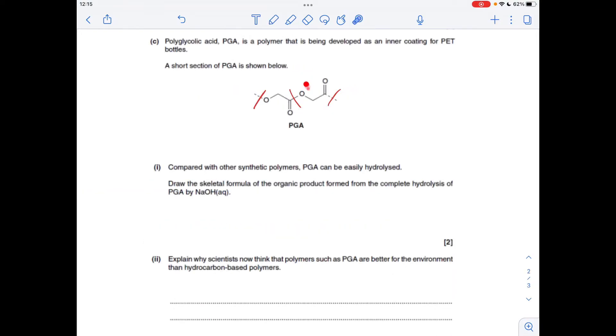Part C now, so we've got this short section of this polymer PGA, polyglycolic acid. Basically what I'm doing is I'm cutting the bonds that you would break when it's hydrolyzed. These are going to give the identical compound because it's the repeat unit.